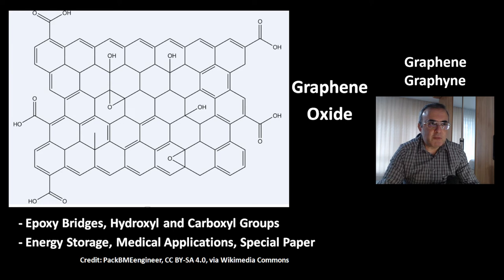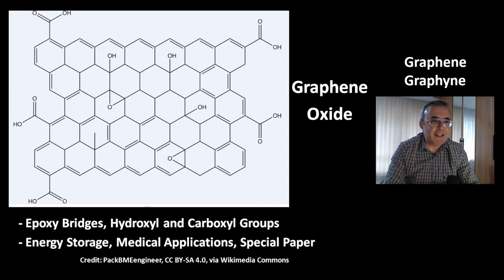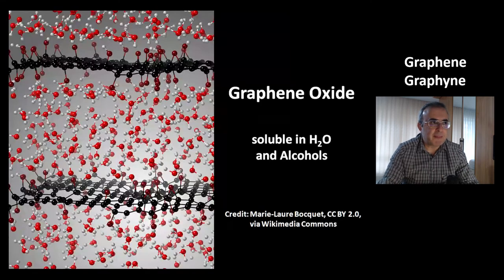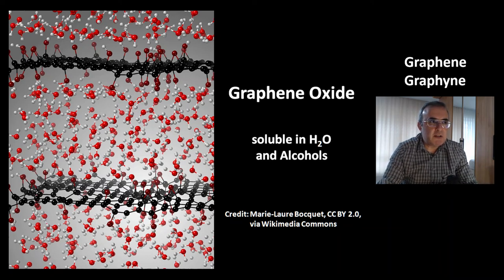Then there is the compound graphene oxide. There are three ways to add oxygen to these graphene layers: epoxy bridges, hydroxy groups, and carboxyl groups. This compound is interesting for energy storage, medical applications, and for special paper. Graphene oxide can make many intermolecular hydrogen bonds, which is why it is soluble in water and in alcohol.